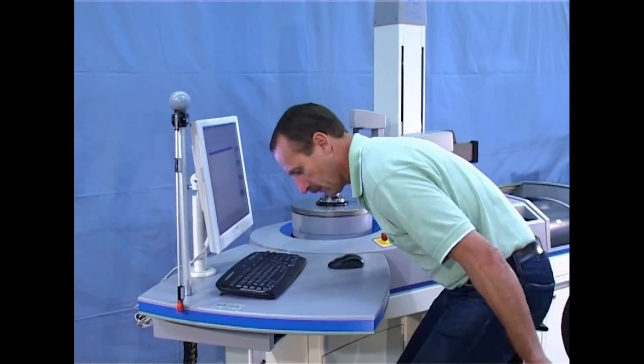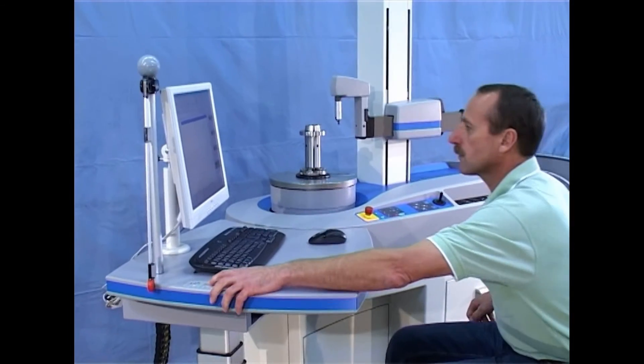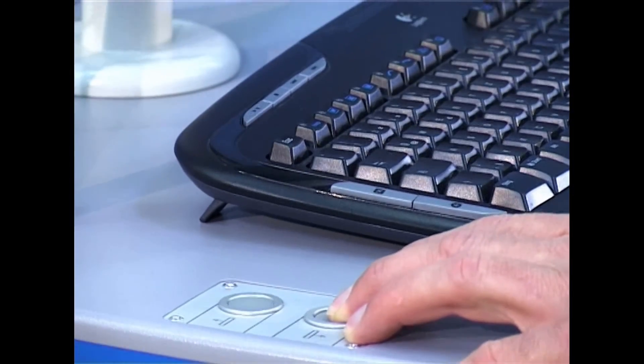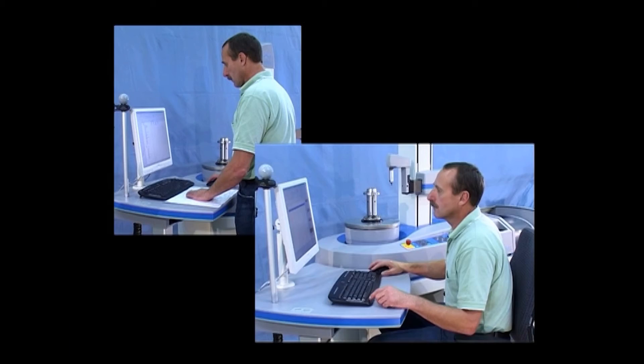The ergonomically designed measuring station is equipped with a workspace with motorized vertical adjustment. The operator can set up a standing or sitting workplace here in a few seconds, depending on whether he is programming or measuring.